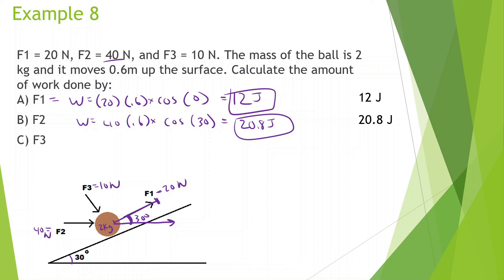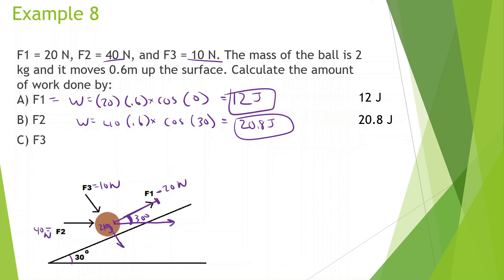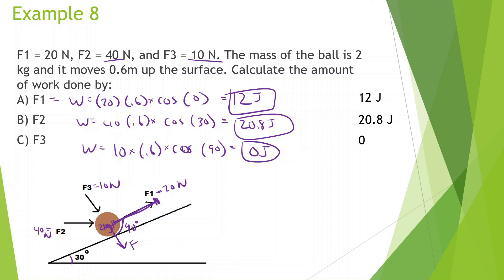For F3, the force of 10 newtons is going directly downward while the displacement is up the ramp, making a 90-degree angle between them. Work equals 10 times 0.6 times cosine of 90, and since cosine of 90 is zero, F3 does zero joules of work. This makes sense — this force isn't helping the object move at all, so it's not giving it any energy. F1 is directly responsible for the motion and gives energy most efficiently.